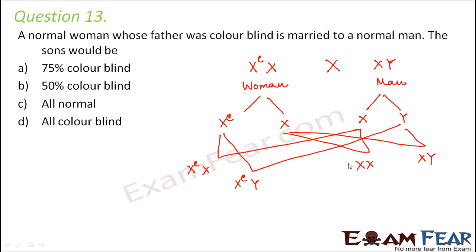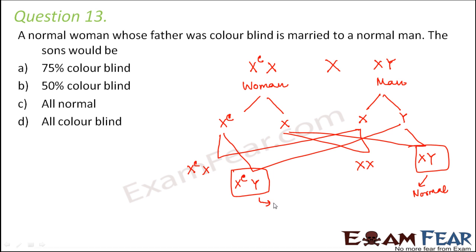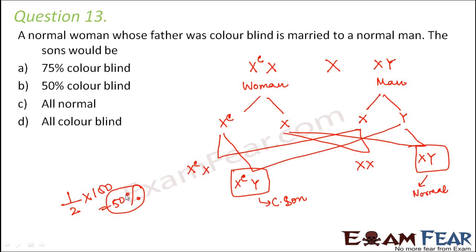Now we have to find what percentage of sons would be color blind. Looking at the sons: one son is X^C Y which is color blind, and the other son is XY which is normal. That means one out of two sons would be color blind. Converting to percentage, 50% of the sons would be color blind. So the right option is B.